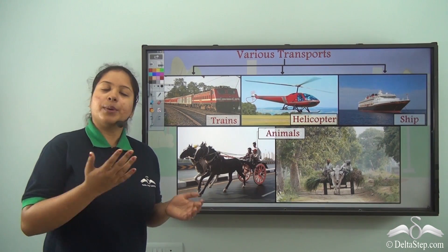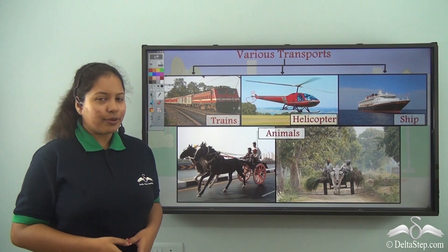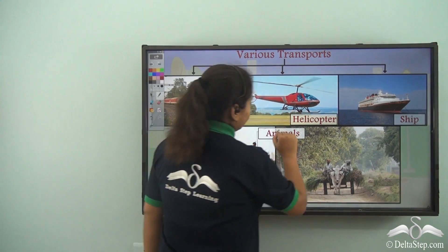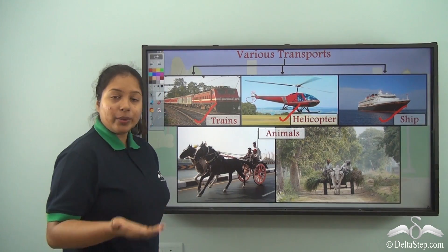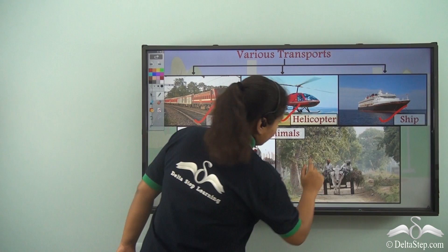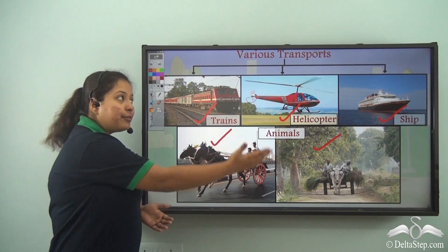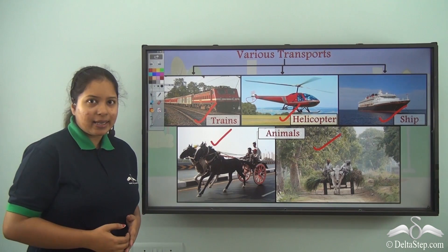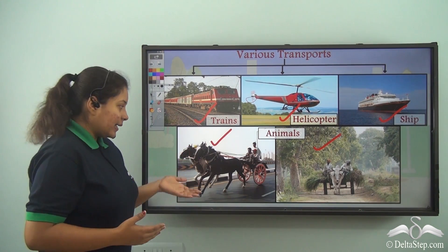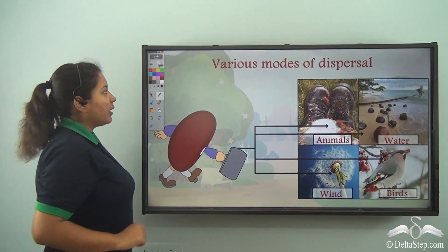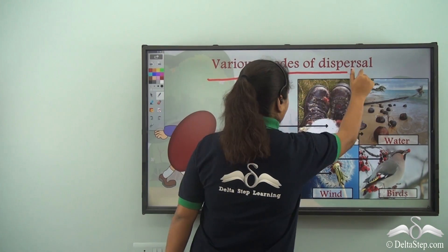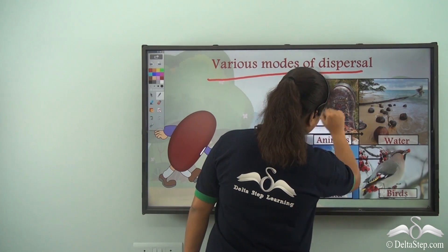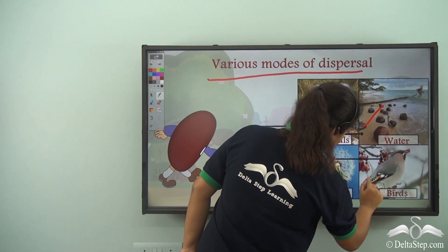Now if we have to travel from one place to another, we take the help of various kinds of transport. What are the different transports that we avail? Well, they are the trains, helicopter, ship and also we take help of animals like the horse cart and the bullock cart. With the help of these different kinds of transport, we travel from one place to another — on land, air, water, as well as with the help of animals. In the similar way, seeds also travel with the help of different things like animals, water, wind and birds.